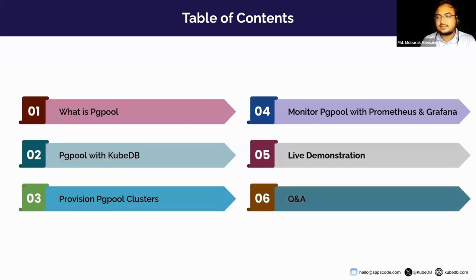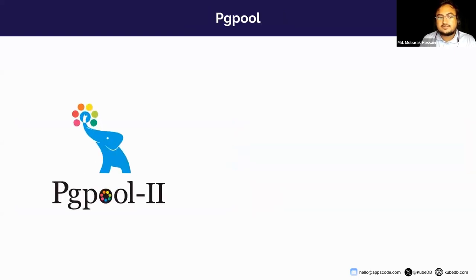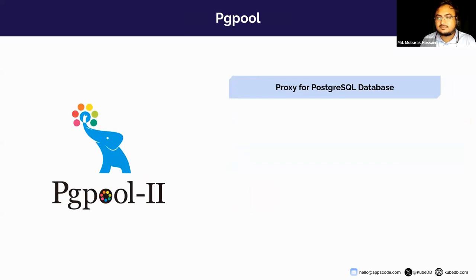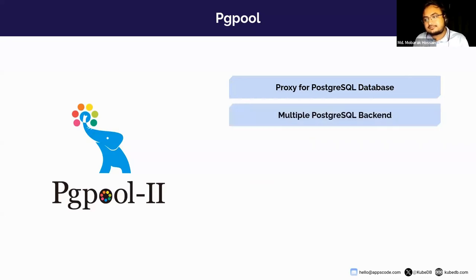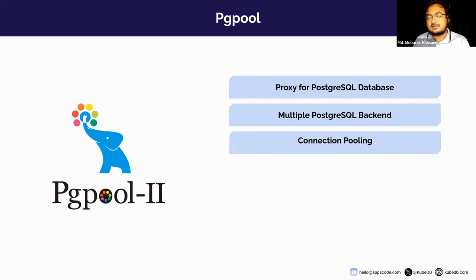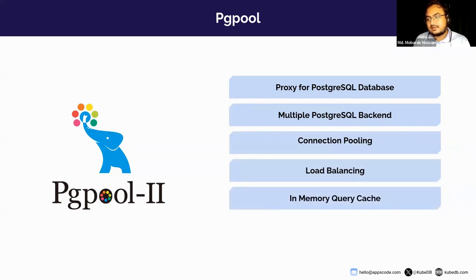So what is PgPool? PgPool is a versatile proxy solution that sits between Postgres servers and database clients. PgPool also supports multiple Postgres backend servers with KubeDB, and it offers essential functionalities such as connection pooling, load balancing, and query caching. You can also route specific queries to your desired Postgres backend server by predefined query rules.